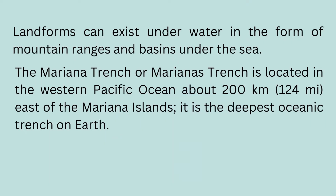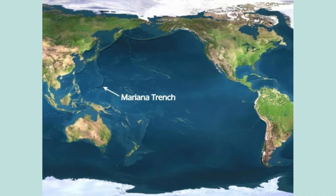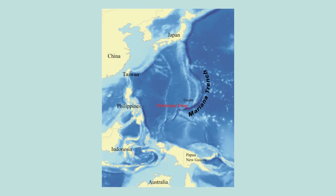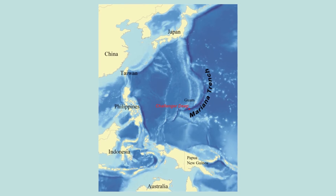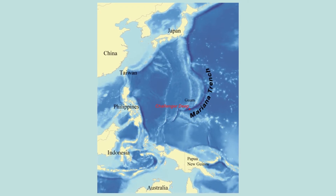Landforms can exist underwater in the form of mountain ranges and basins under the sea. The Mariana Trench is located in the western Pacific Ocean, about 200 kilometers east of the Mariana Islands. It is the deepest oceanic trench on Earth.